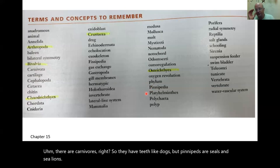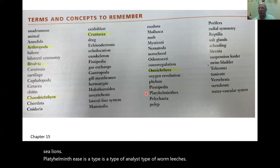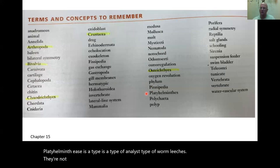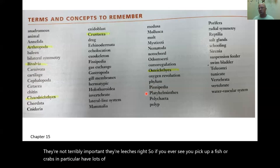Platyhelminthes is a type of worm — leeches. They're not terribly important. Crabs in particular have lots of leeches, which are platyhelminthes.